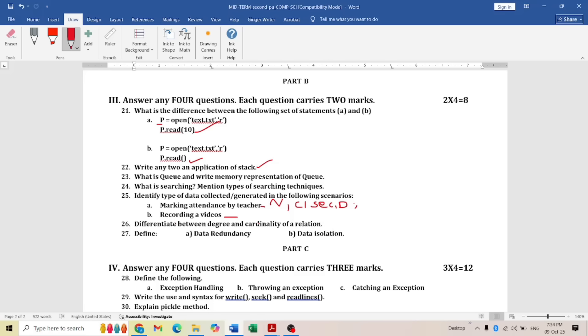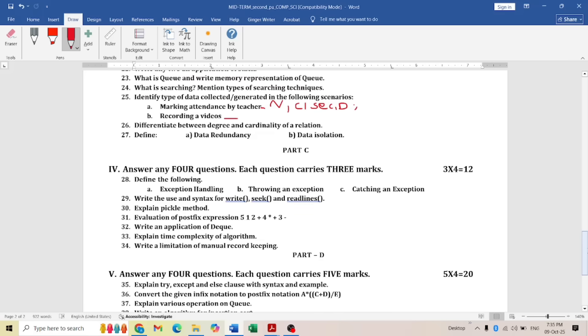Next: differentiate between degree and cardinality of a relation. You have to mention it. Next: define data redundancy and data isolation. All this I have mentioned already in the database revision notes. Please go through that.